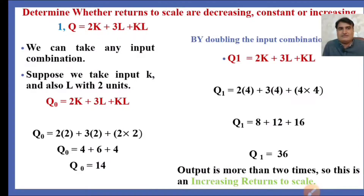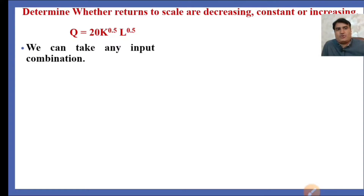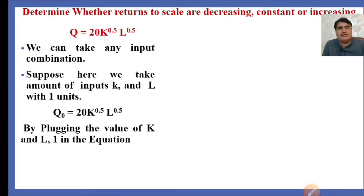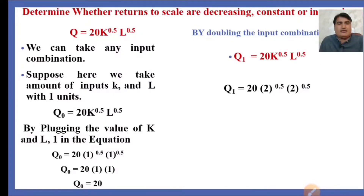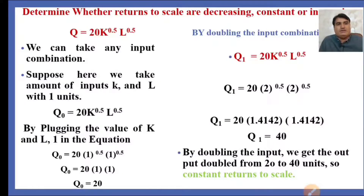The second production function is Q = 20K^0.5 L^0.5 — whether it is increasing, decreasing, or constant. Likewise, we take any input combination. Suppose we take K and L equal to 1 unit each. By plugging K=1 and L=1 into the equation, Q0 = 20×1^0.5×1^0.5 = 20 units. By doubling the input to K=L=2, we get Q1 = 40. The output has doubled, so this is a constant return to scale.